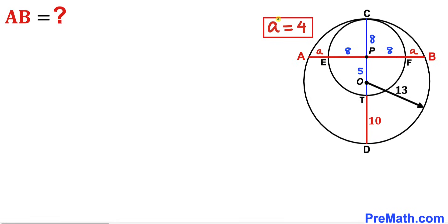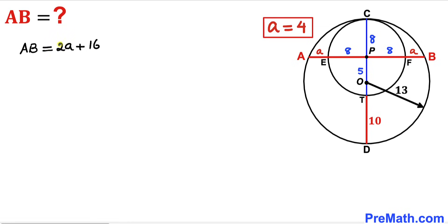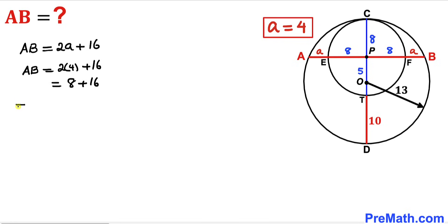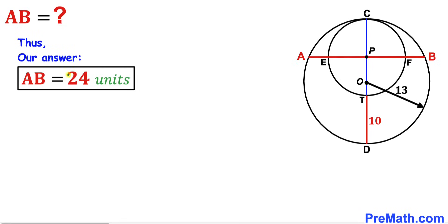Now that we know a equals 4, the full chord AB equals a plus a plus 8 plus 8, which is 2a plus 16. Substituting a equals 4: AB equals 2 times 4 plus 16, which is 8 plus 16. Therefore chord AB equals 24 units. That's our final answer. Thanks for watching and please don't forget to subscribe to my channel for more exciting videos!